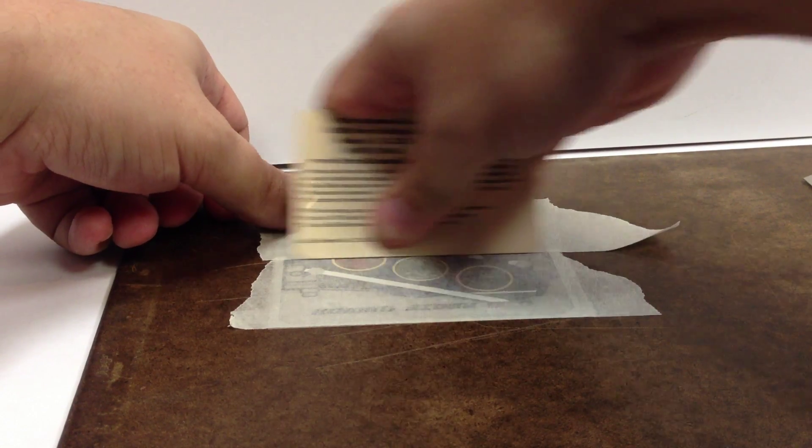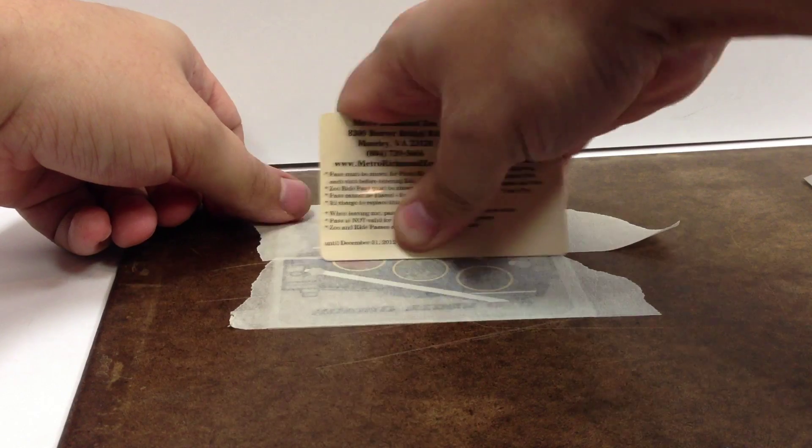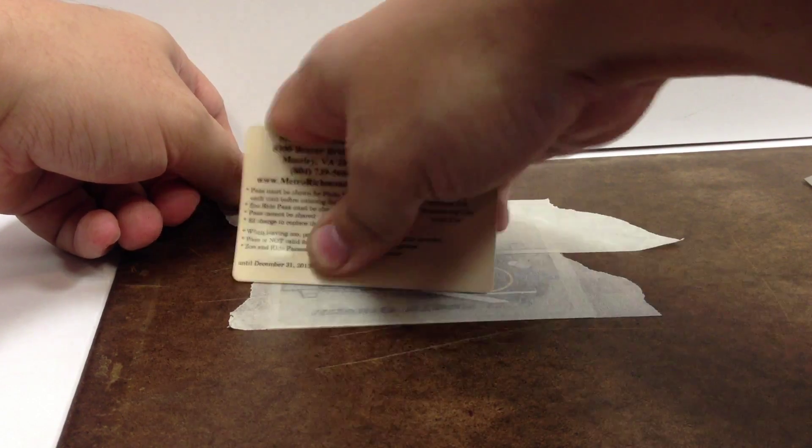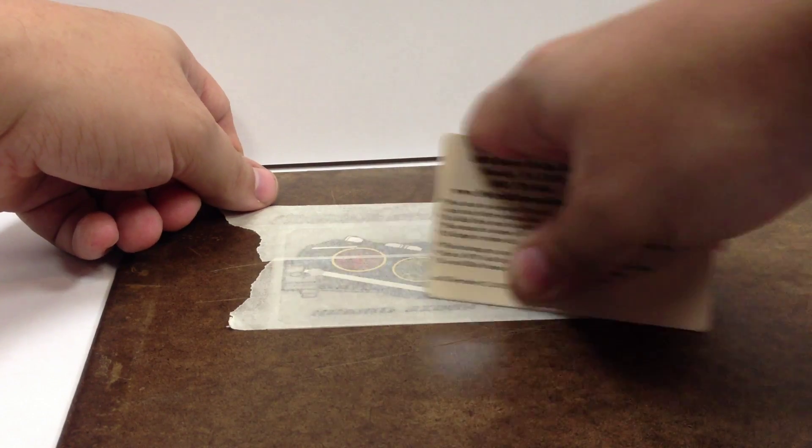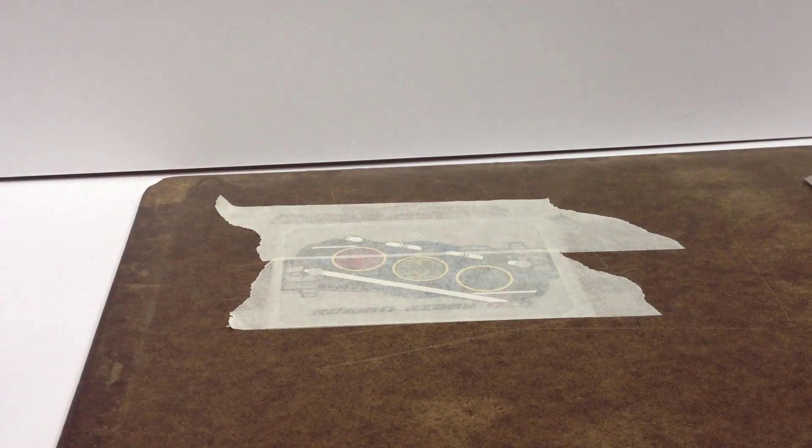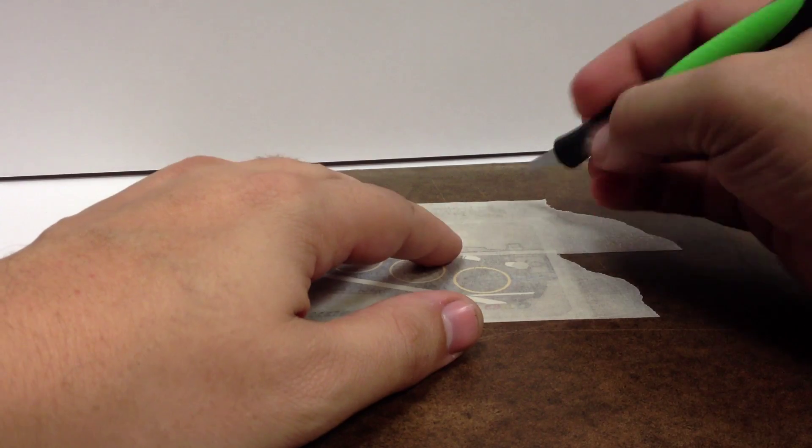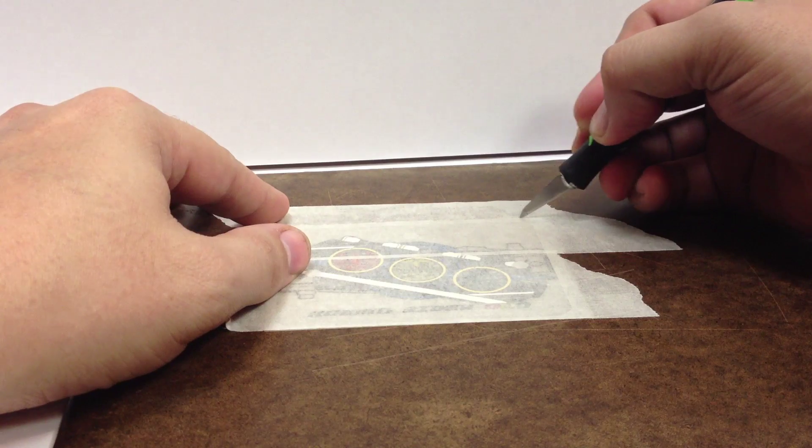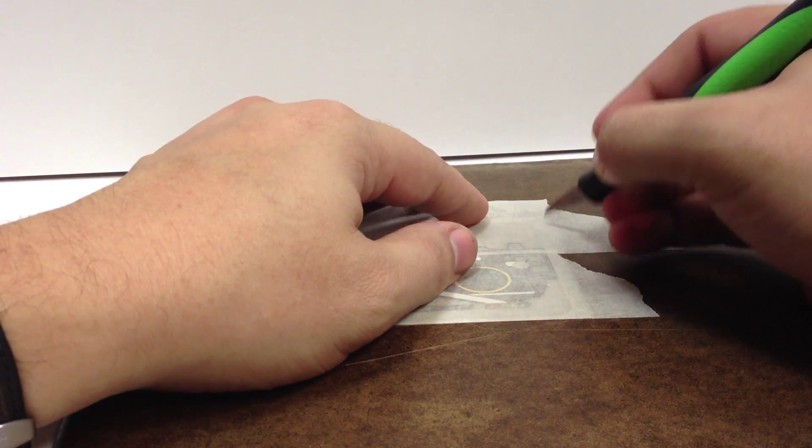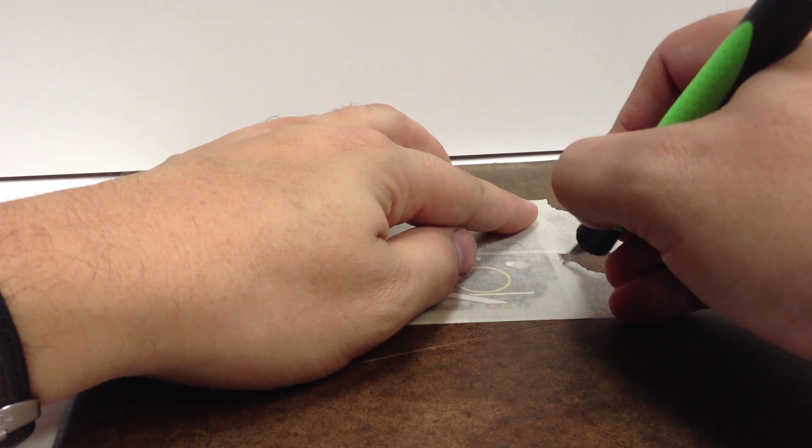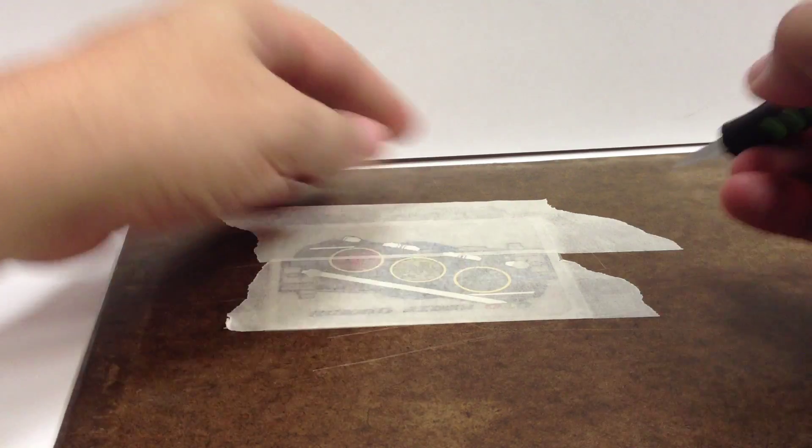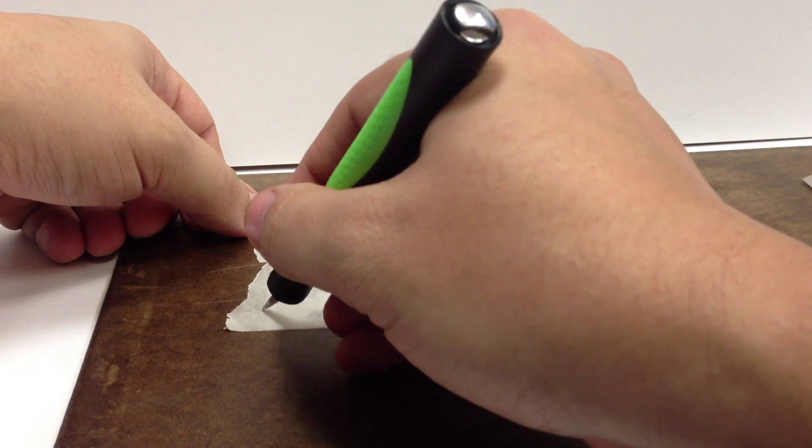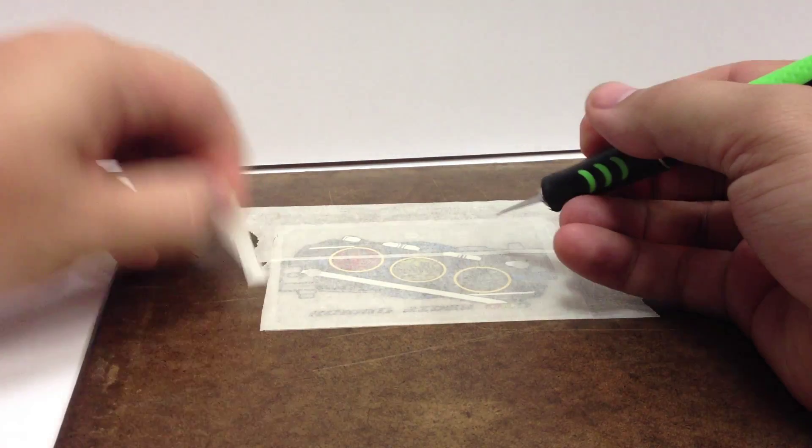Make sure it gets a good seal there up against the other piece of tape, just like that. Then you cut away the excess tape just from around the plastic.